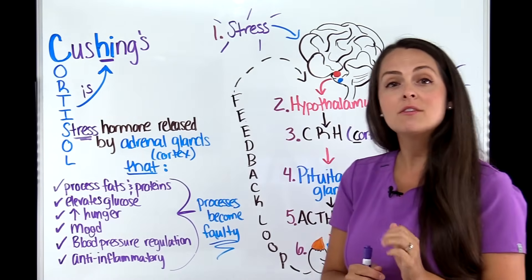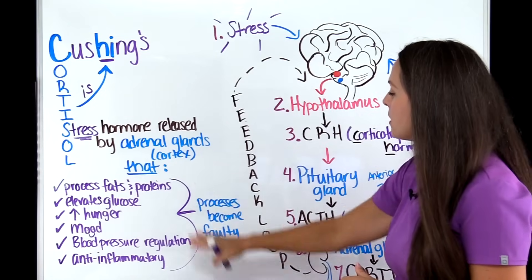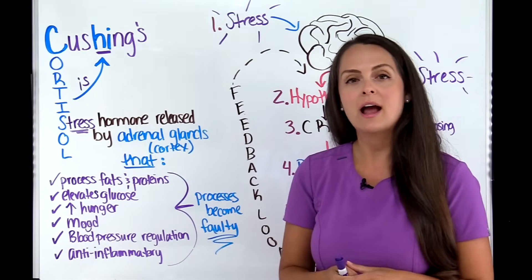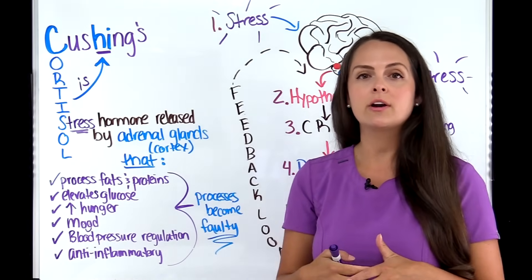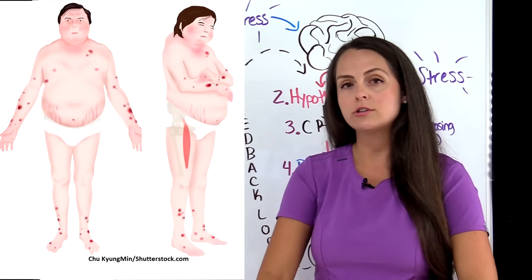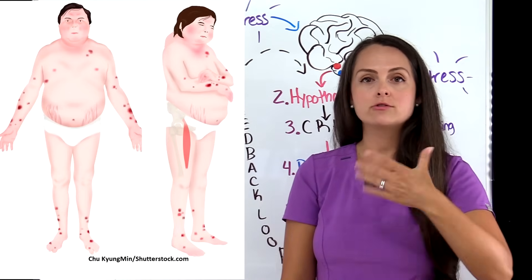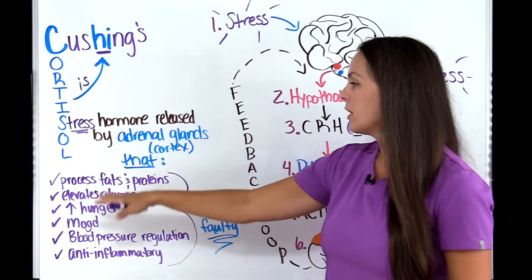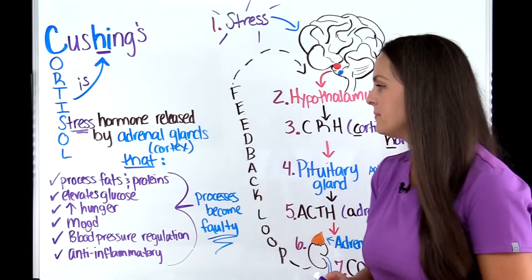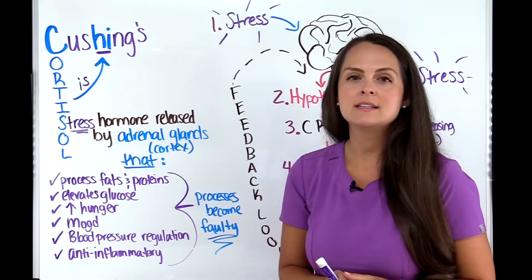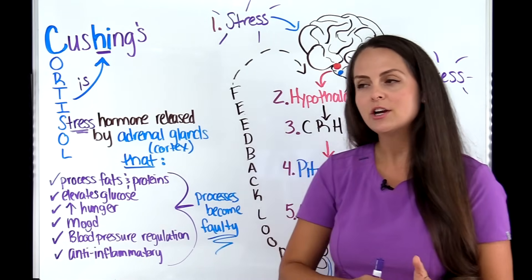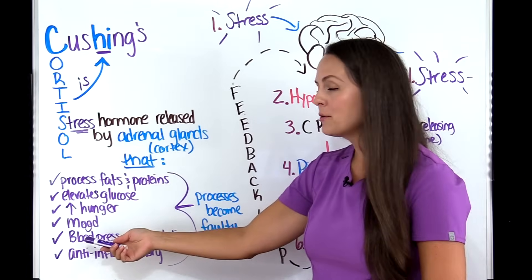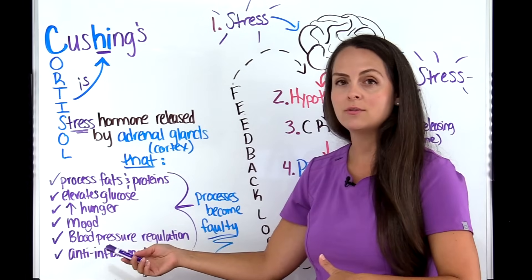Whenever we have excessive cortisol for too long, these processes become faulty. Instead of properly processing fats and proteins, classic signs and symptoms appear. The extremities become thin due to muscle wasting, while fat redistributes centrally — truncal obesity — accumulating in the face, back, and abdomen. Glucose becomes extremely high, causing hyperglycemia, because high cortisol enhances gluconeogenesis, causing the liver to produce glucose from non-carbohydrate sources. Focus and alertness turn into anxiety and depression.